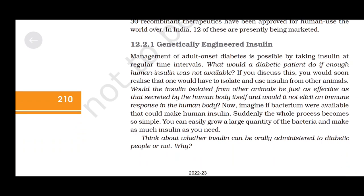Genetically Engineered Insulin. Management of adult-onset diabetes is possible by taking insulin at regular intervals. Insulin used for diabetes was earlier extracted from the pancreas of slaughtered cattle and pigs, and insulin from animal sources caused some patients to develop allergies or other reactions. If a bacterium were available that could make human insulin, the whole process becomes simple — large quantities of bacteria can be grown to produce as much insulin as needed.